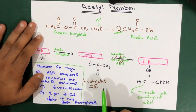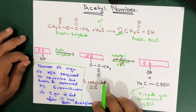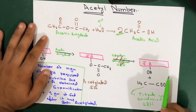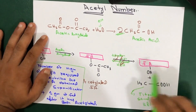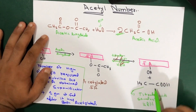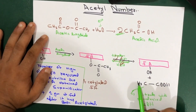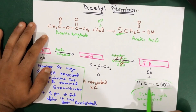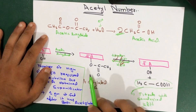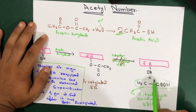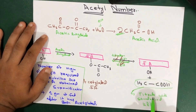So when this Acetylated fatty acid converts — when it breaks down — we get what we call Acetic Acid. We get Acetic Acid when the Acetylated fatty acid is converted back into the fatty acid and Acetic Acid.